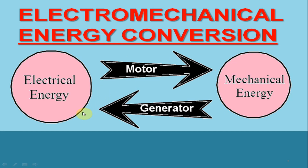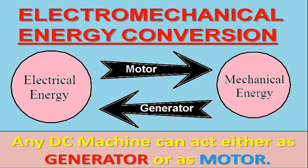Unlike a transformer, which is a static electrical machine, motors and generators do have rotating parts. Only the transformer is a machine which allows transformation of electrical power only. It is also worth mentioning that an electrical machine can be operated both as a generator or as a motor, and it is decided by the input to the machine — whether it is a mechanical input or an electrical input.